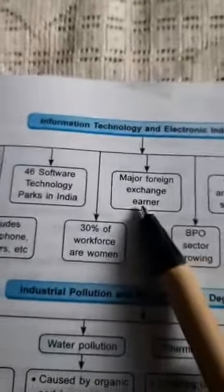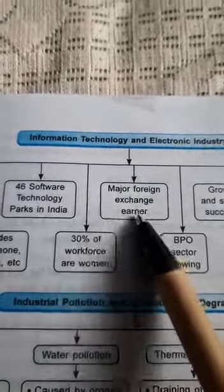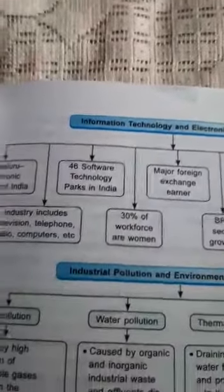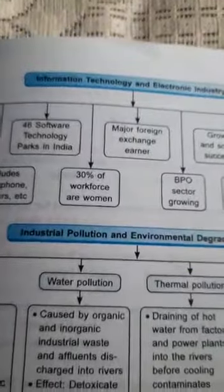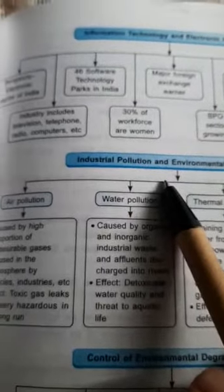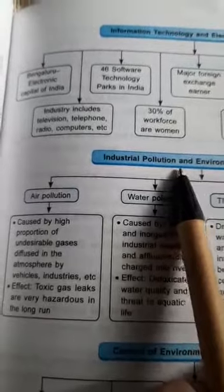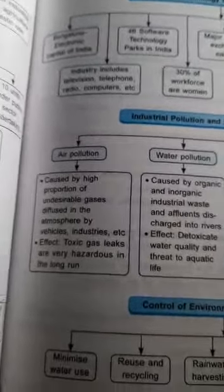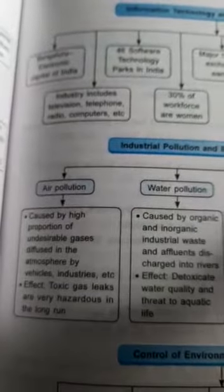This is a major sparkling point — IT is a major foreign exchange earner. We have now read about all the industries. Environmental and industrial pollution is one of the major environmental issues, because industrial pollution is a major part of environmental degradation.